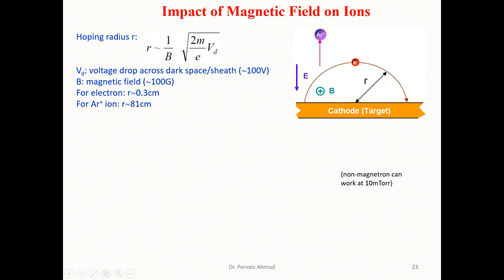For the magnetic effect on ions, we should have the hopping radius R, which is equal to (1/B) times the square root of (2m/e times V_D), where V_D is the voltage drop across the dark space or sheath, approximately equal to 100 volts, and B is the magnetic field with a value approximately equal to 100 gauss. For electrons, R is approximately 0.3 centimeters, and for argon ions, R is equal to 81 centimeters.